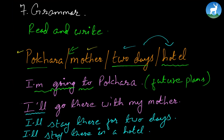And all three sentences that follow are simple future, with the application of 'will' — meaning somewhere in the future he's going there with his mother, and he'll stay there for two days, he'll stay there in a hotel. The future is indefinite — we don't know when. We just know the subject is going to Pokhara, going with his mother, staying for two days, staying in a hotel. And all these things relate to future tense. Don't forget that — this chapter is talking about future.